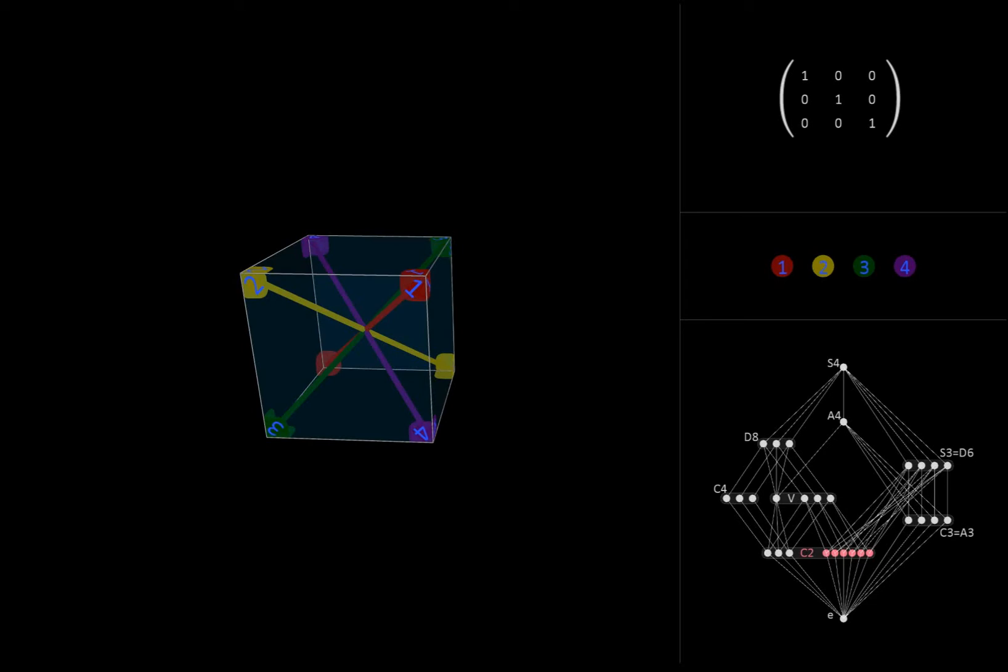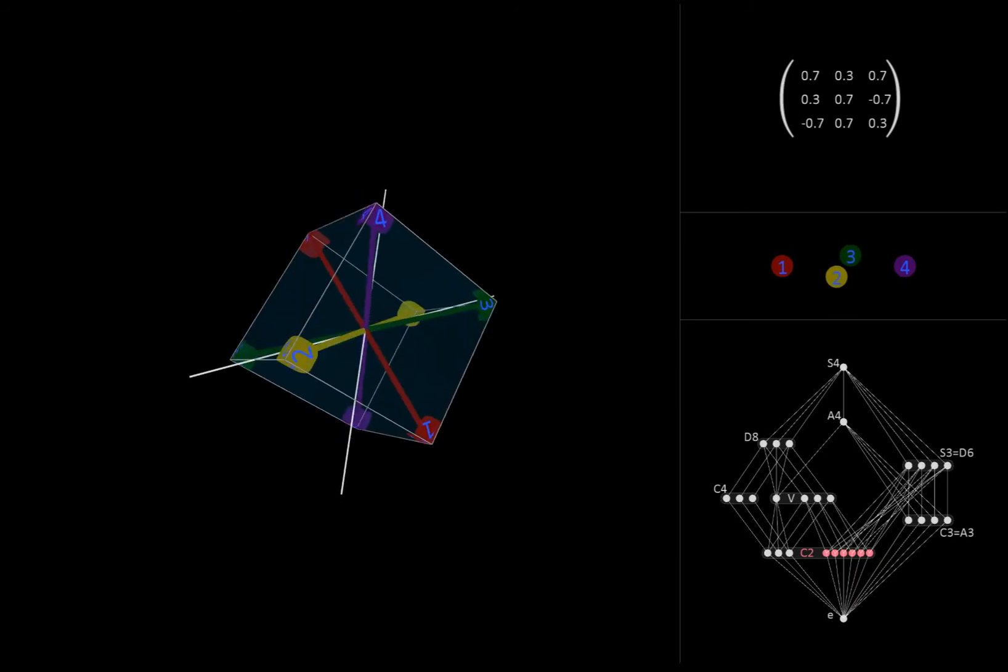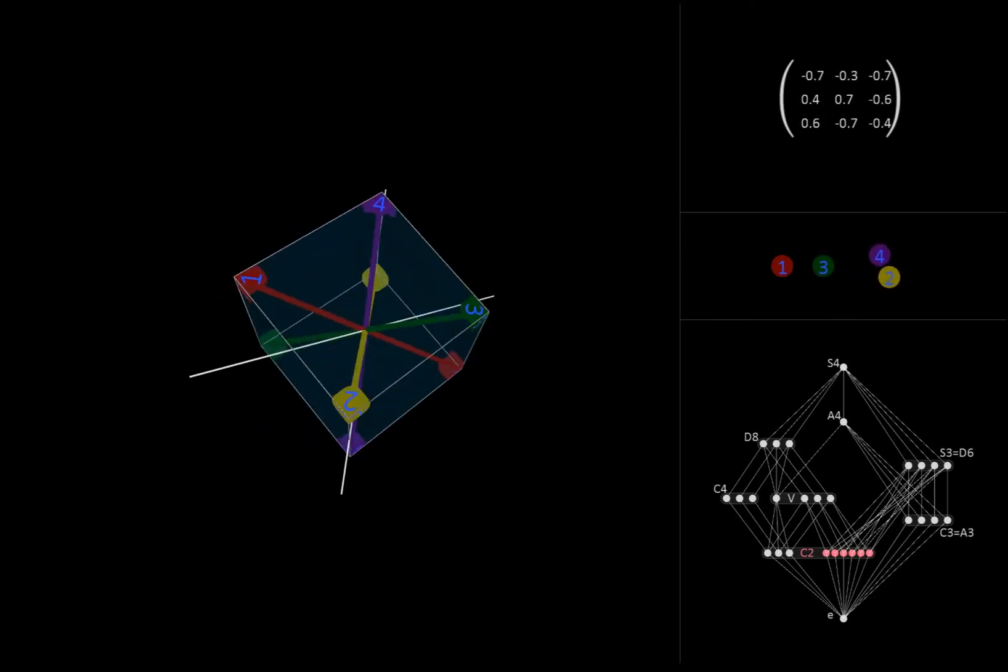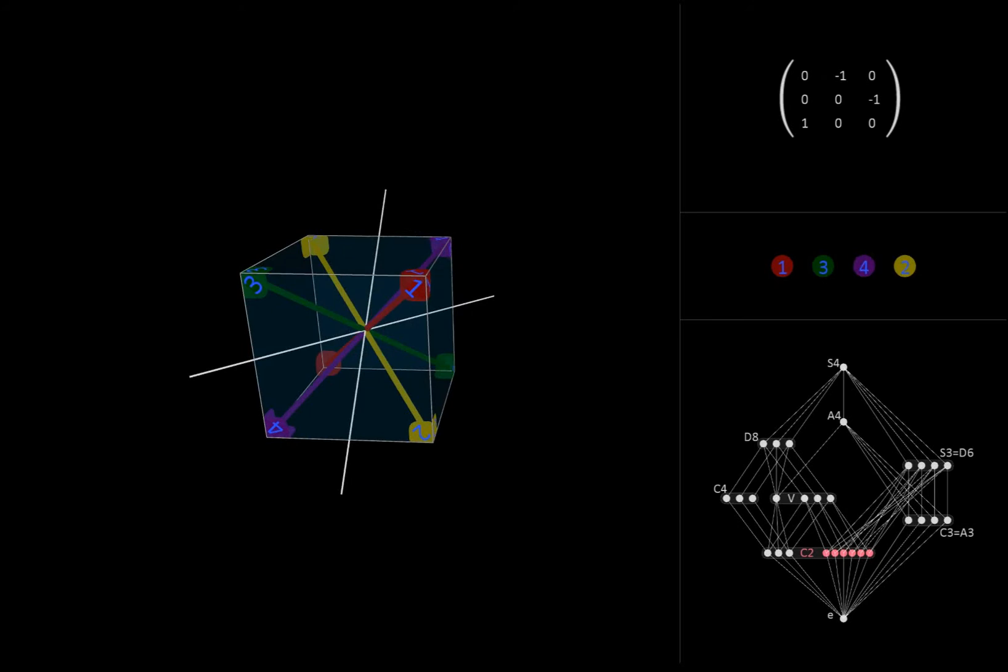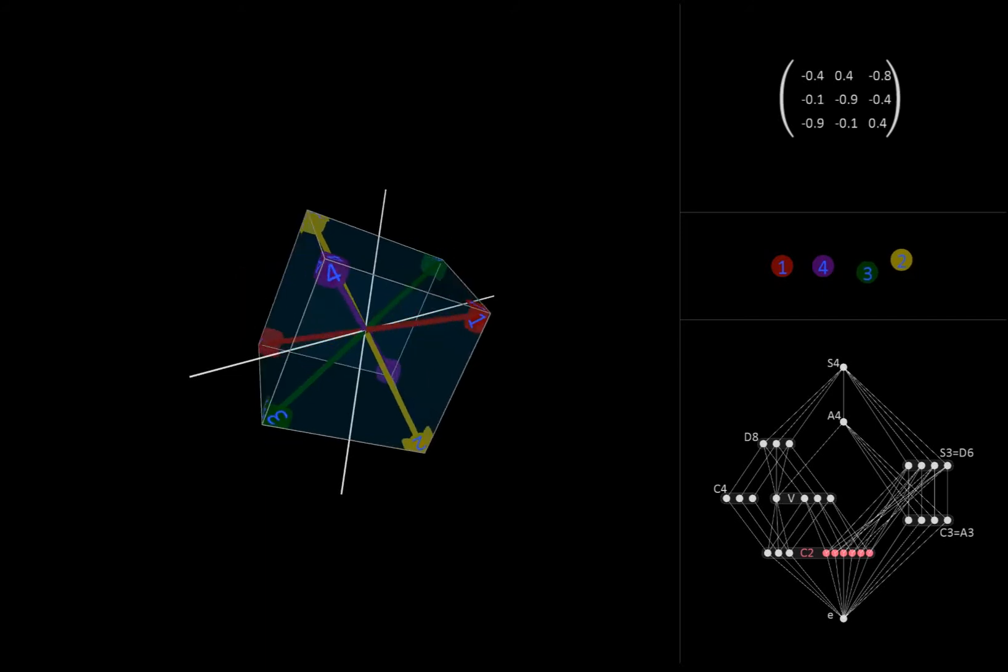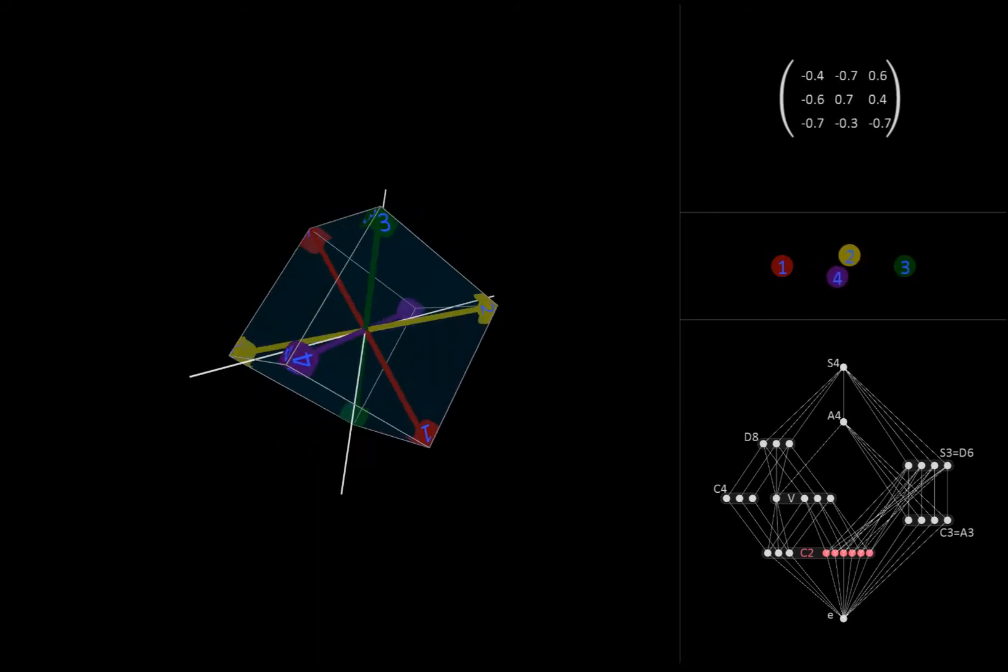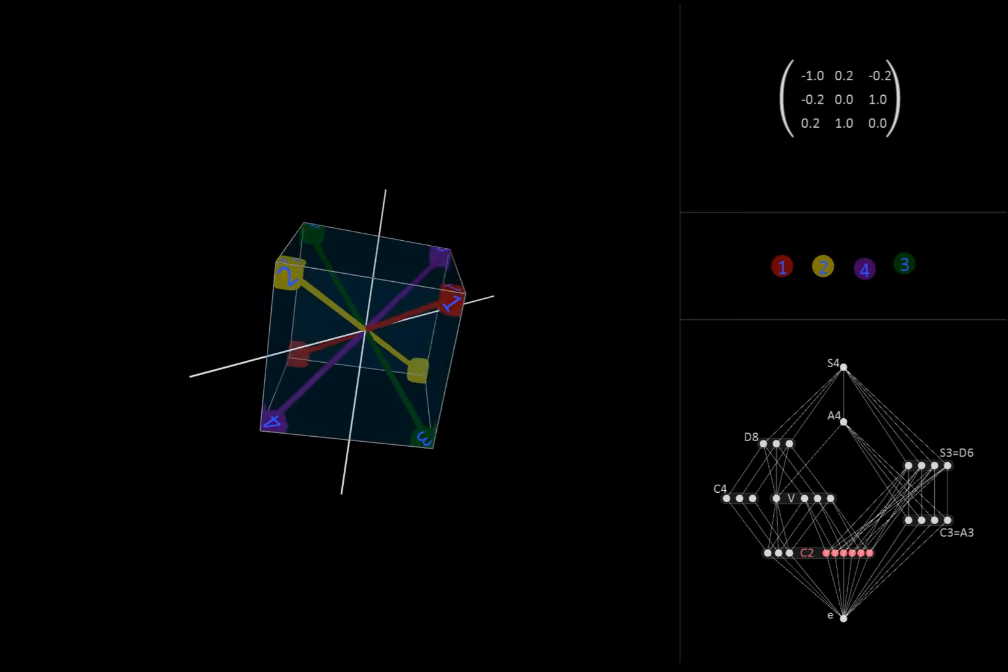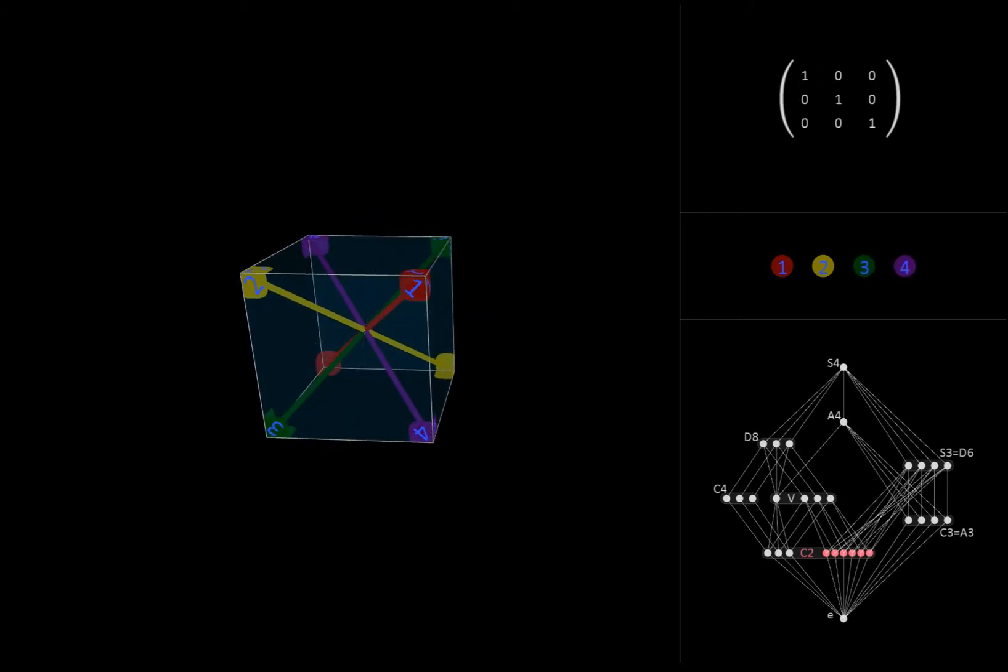But what if we were to take a mismatched pair? Say, a rotation about this line, and a rotation about this line. These rotations correspond to a pair of two cycles that are not disjoint. Let's try combining them repeatedly and see what happens. Watch how the dots get permuted. What we have just done is use a sequence of transpositions, i.e. two cycles, to generate a group of order 6, specifically a dihedral group D6, which is isomorphic to the symmetric group S3.